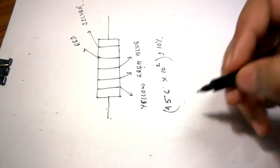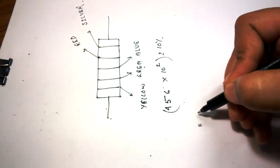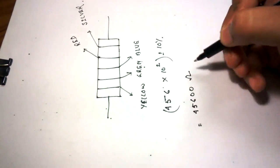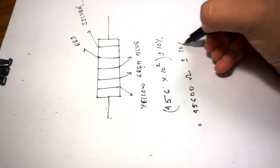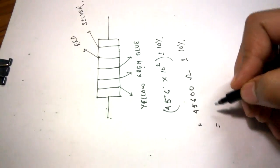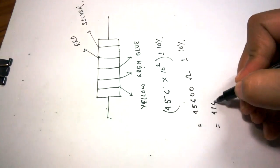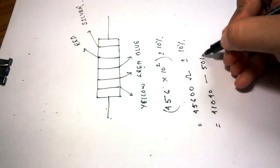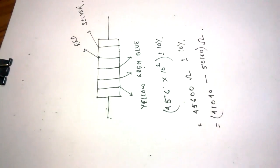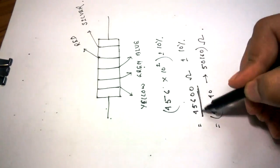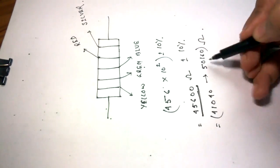Okay, now, 4, 5, 6, 0, 0, ohms, 10 percent. That means, 41,040 to 50,160. The actual value of the resistor will be very near to this value, but it will always be between these values.